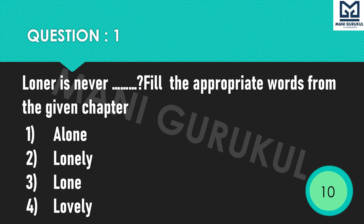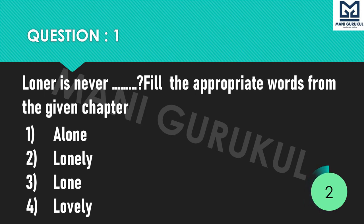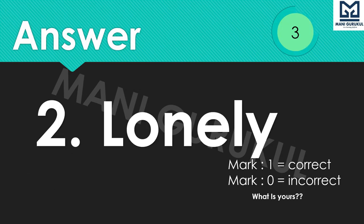Question 1: 'Lonely is never dash' — Fill in the appropriate word from the given chapter. Options: 1st Alone, 2nd Lonely, 3rd Lonely, 4th Lovely. Your time starts now. Time's up. Answer is 2nd: Lonely.